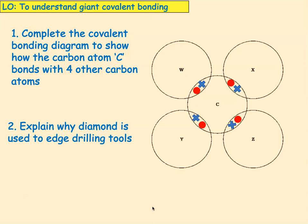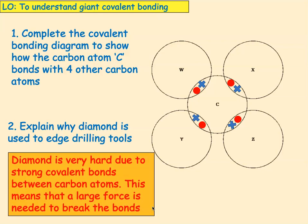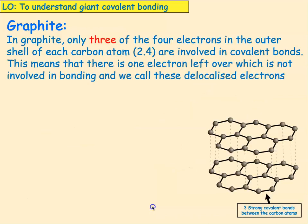Why is diamond used to edge drilling tools? Diamond is very hard due to the strong covalent bonds between the carbon atoms, so a large force is needed to break the bonds. There are an awful lot of bonds in diamond because it's a giant substance.